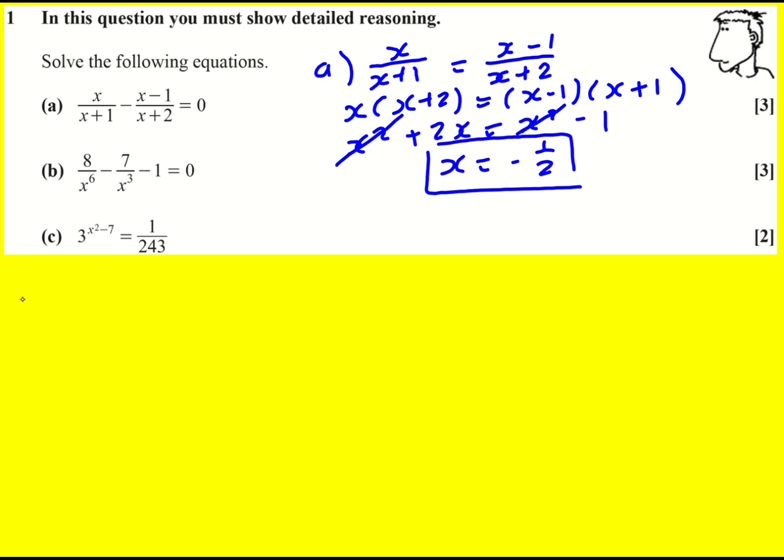On to the next one b. Okay we've got more fractions, let's deal with it, let's get rid of the fractions. This time definitely need to just times through by something right from the beginning, you can't really cross multiply as such because there's three terms. So I'm going to multiply through both sides by x to the 6.